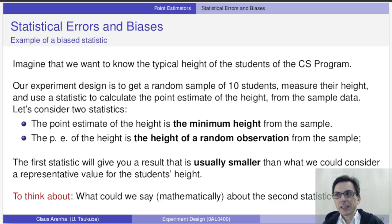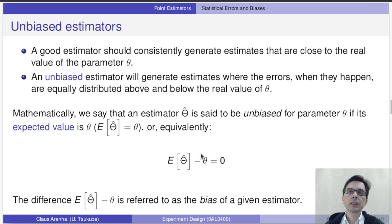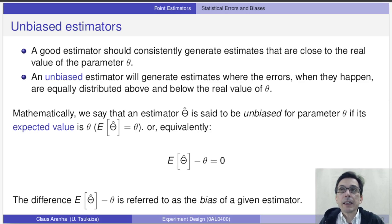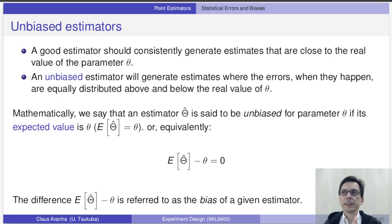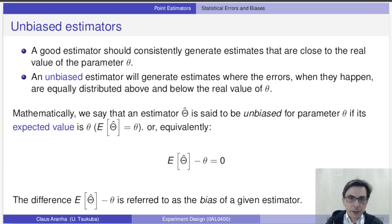What can we say about the second one? Think about it for a second — what are the characteristics of the second estimator, the height of a random observation of one student? An unbiased estimator is a statistic, a function from the data, that when it has an error, this error is equally distributed above and below the true value. We can describe this mathematically by saying that the difference between the expected value of the estimator and the true value of the parameter is zero.